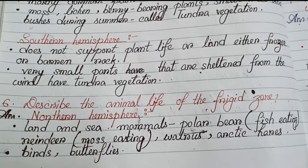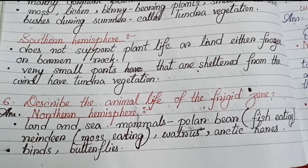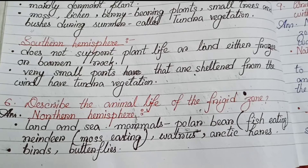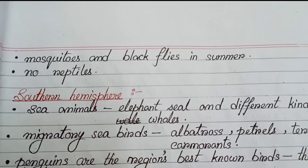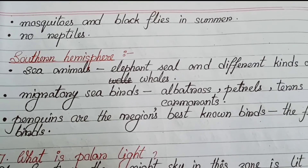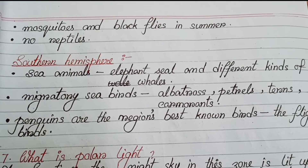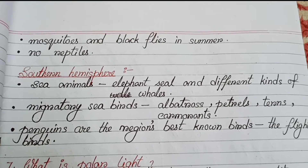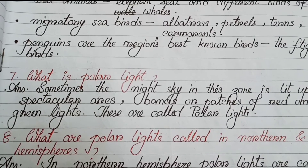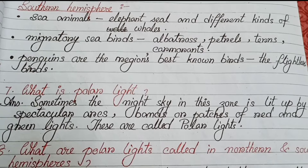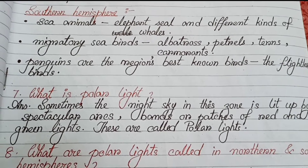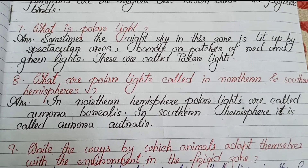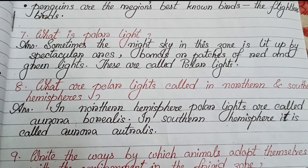Number six: Describe the animal life of the frigid zone. Northern hemisphere — land and sea mammals: polar bear, reindeer, walrus, arctic hares; birds, butterflies, mosquitoes and black flies in summer; no reptiles. Southern hemisphere — sea animals like elephant seal and different kinds of whales; migratory sea birds: albatross, petrels, terns, cormorants; penguins are the region's best-known birds — flightless birds. Number seven: What is polar light? The night sky is lit up by spectacular arcs, bands and patches of red and green lights, called polar lights. Number eight: In the northern hemisphere they are called aurora borealis; in the southern hemisphere, aurora australis.